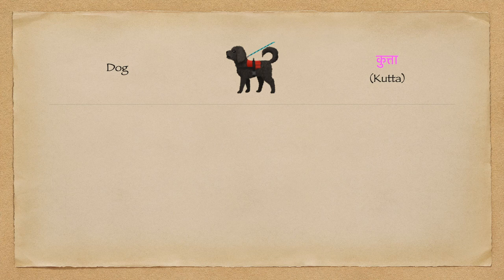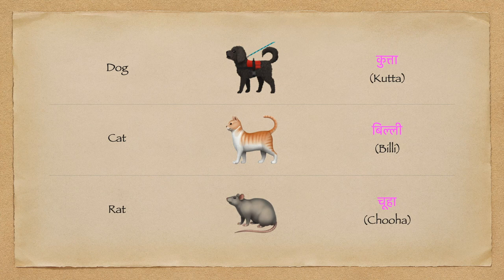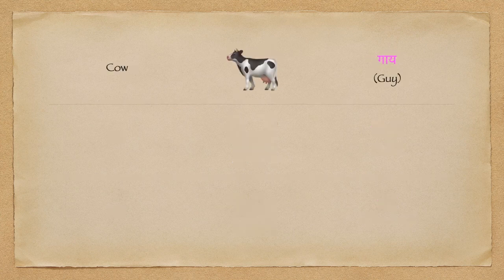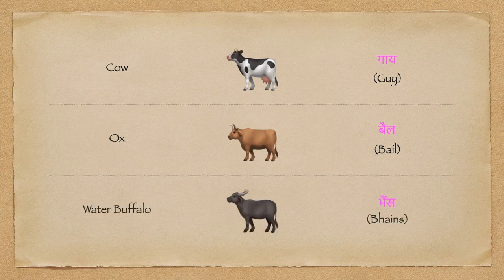Dog is called Kutta in Hindi. Cat is Billi. Rat is Chuha. Cow is called Gay. Ox is Bail. And water buffalo is called Bhains.